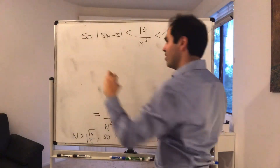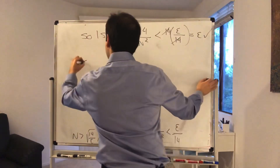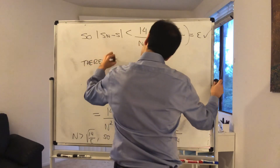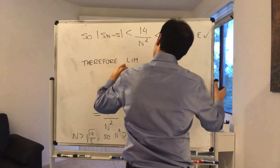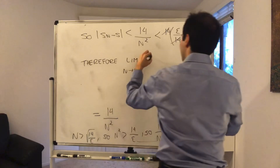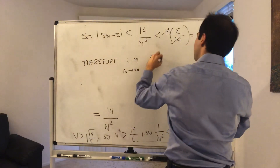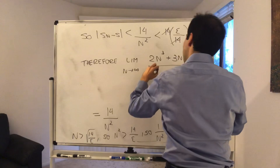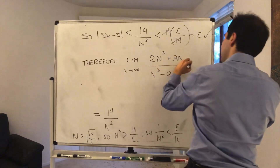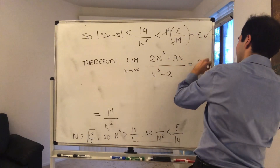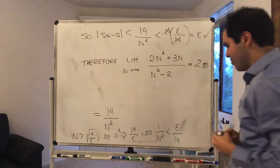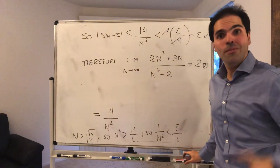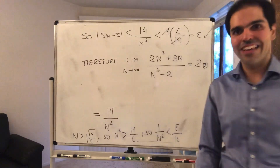Therefore, the limit as n goes to infinity of 2n cubed plus 3n over n cubed minus 2 is indeed 2. Therefore, we can go home happy. Next time, we'll do even more examples of this. Thank you.